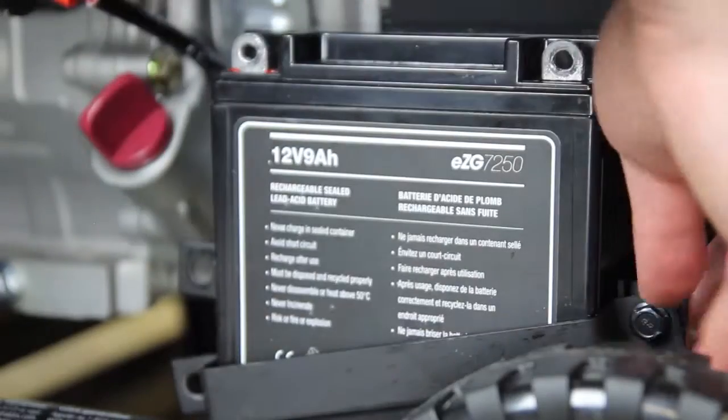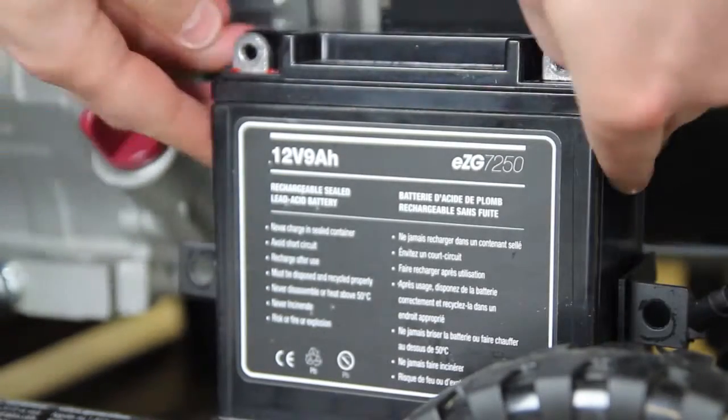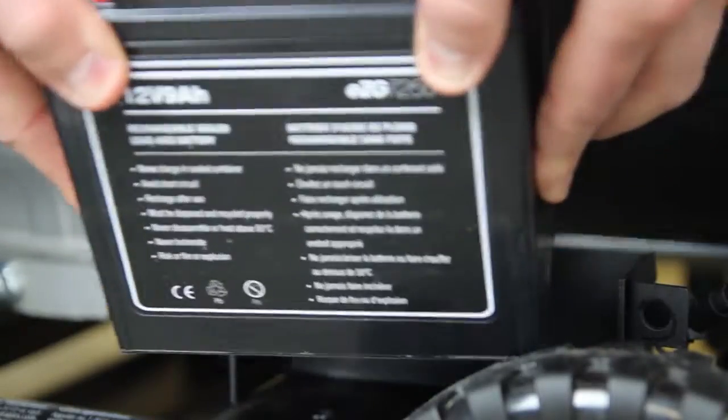Store the battery upright in a dry, approximately room temperature environment on a scrap piece of wood or plastic shelf. Recharge it once a month.